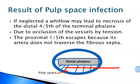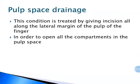In the picture shown, you can see the pulp space — that is the pulp of the finger — and the distal phalanx. The pulp space is divided into different compartments by fibrous septa running from skin to the periosteum. You can see the artery running proximal to distal. The proximal one-fifth receives blood supply, whereas due to whitlow the distal four-fifths is cut off from blood supply. This condition is treated by giving an incision along the lateral margin of the pulp of the finger, which opens all the compartments of the pulp space.